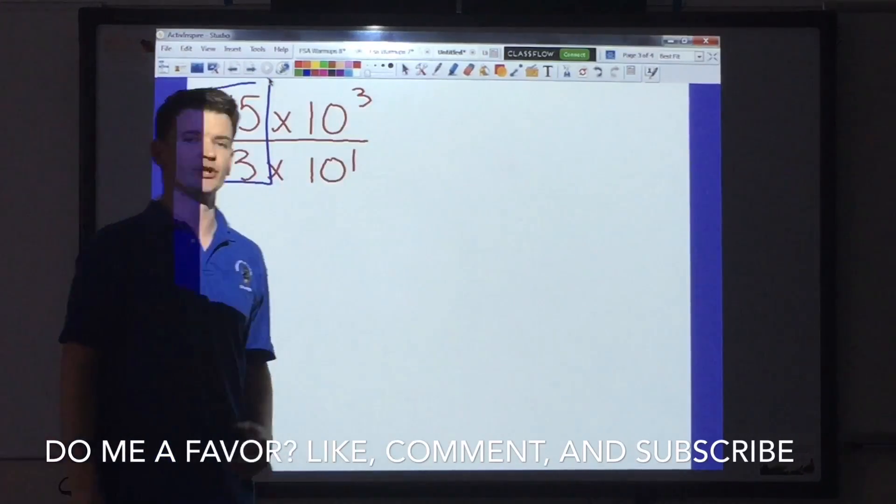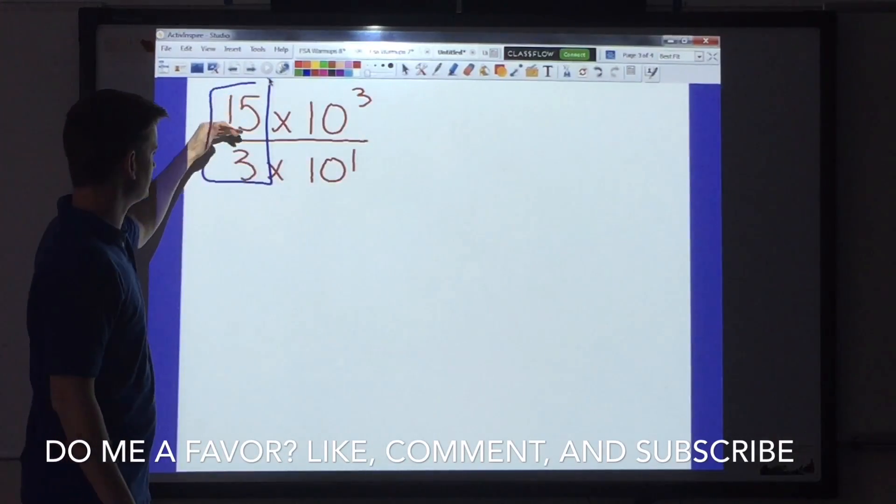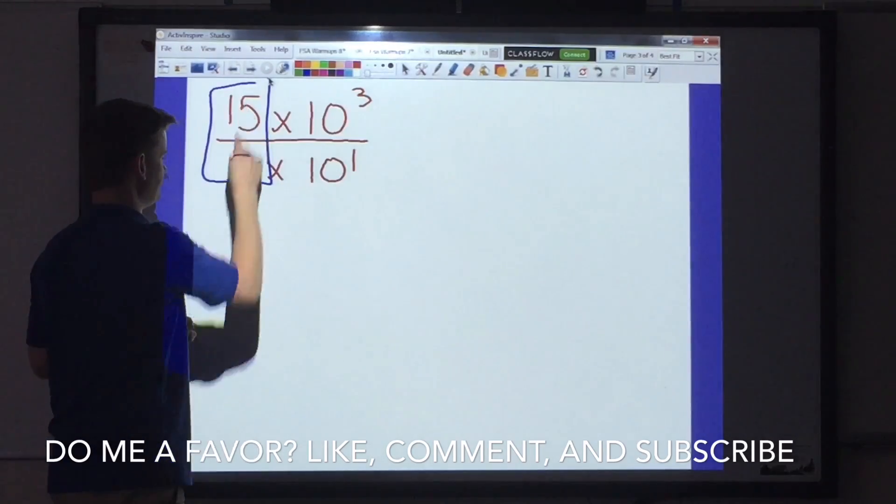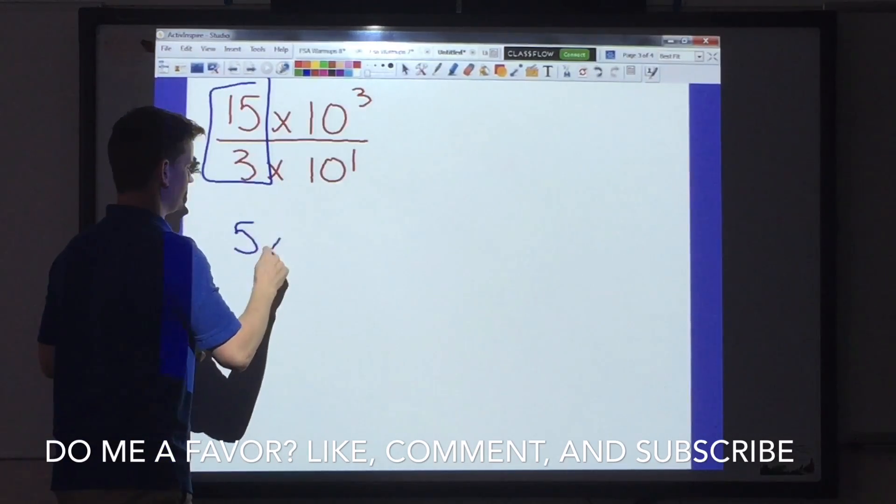That's division. So we're going to go and we're going to do 15 divided by 3 and that is 5. Good job. 15 divided by 3 gives me 5 times.